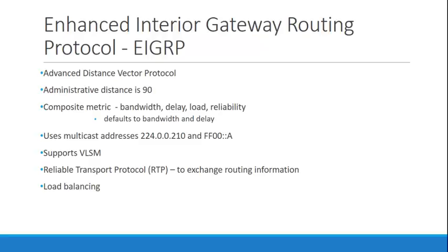Its administrative distance is 90. Administrative distance comes into play when you have multiple routes to the same destination via multiple routing protocols. If I can get to the same route using multiple routing protocols, I'm going to choose the route from the protocol with the lowest administrative distance — it's considered more trustworthy. So if I have a RIP and an EIGRP route that both go to 192.168.2.0, I'm going to use the EIGRP route because it has a lower or better administrative distance.